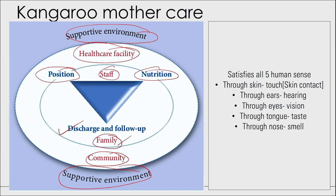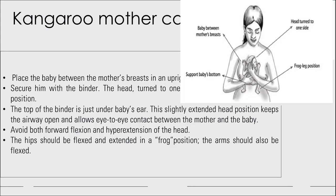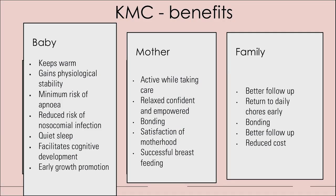KMC should satisfy all five human senses — touch through skin contact, hearing, vision, taste, and smell. For positioning: the baby is placed on the mother's breast in an upright position, chest to chest, secured with a binder. The head is turned to one side in a slightly extended position, with the top of the binder just below the baby's ear. This keeps the airway open and allows eye-to-eye contact. Avoid forward flexion and hyperextension of the head. The hips should be in the frog position and the arms flexed.